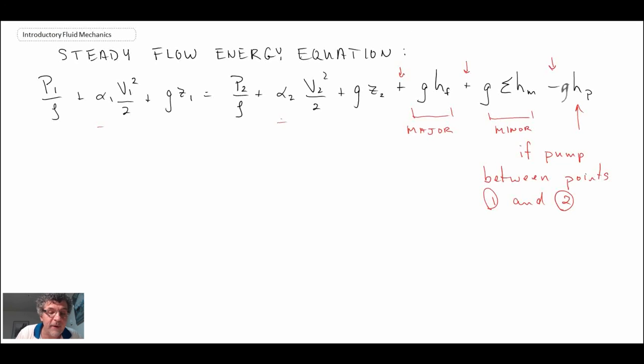So that is the steady flow energy equation, fairly straightforward in terms of just looking what components you might have within a piping system, adding up the minor losses, computing the friction factor for whatever flow regime you might be in, laminar or turbulent, and you add them all up, and you can then do pressure drop calculations and different things like that with the steady flow energy equation. So that concludes our segment looking at minor losses in piping systems.